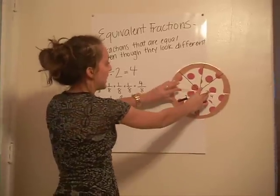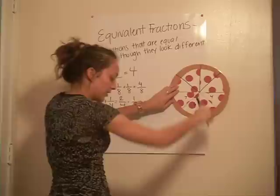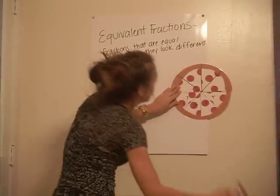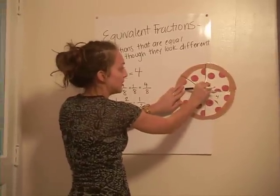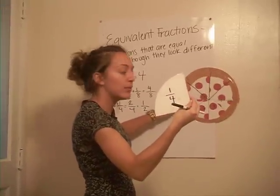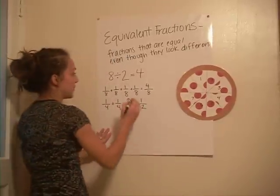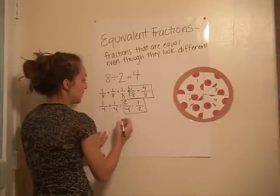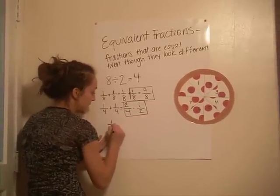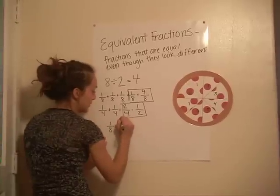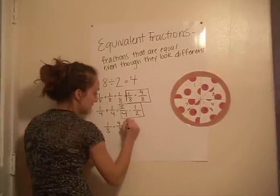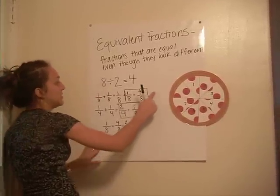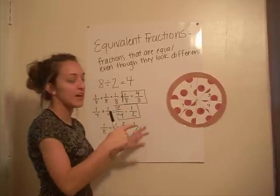If we look at one fourth, we have one, two, three, four — so that's four one-eighths. And we have two one-fourths. Therefore, we have an equivalent fraction: four eighths equals two fourths. All of these are related because these two are equivalent fractions, even though they are different sizes.